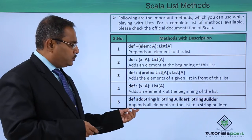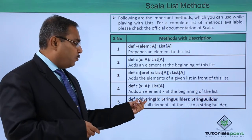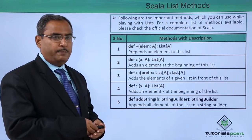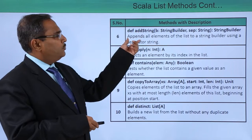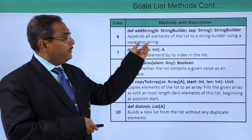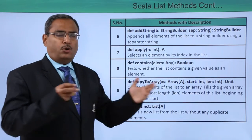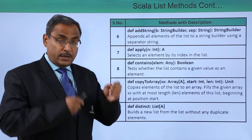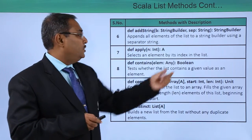We have `addString` which appends all the elements of the list to a StringBuilder. All the elements in the list will be concatenated forming a StringBuilder class object. There is also an `addString` overload that appends all elements using a separator string, so all those elements will be concatenated into a StringBuilder but separated by the separator passed in.